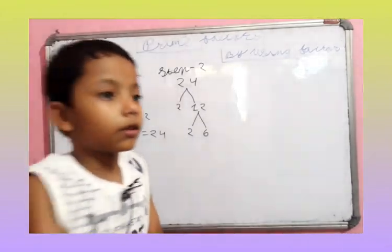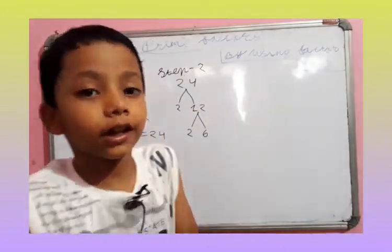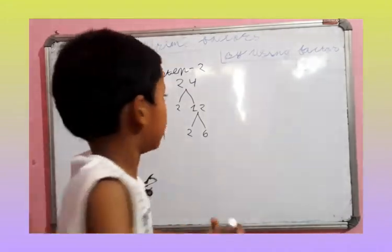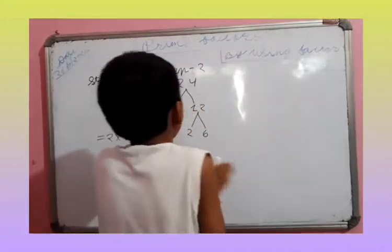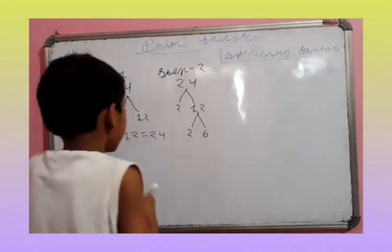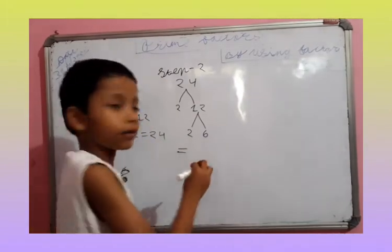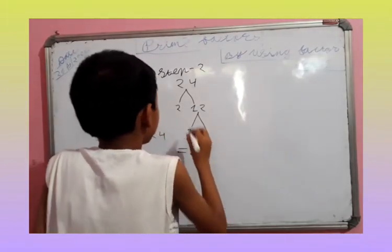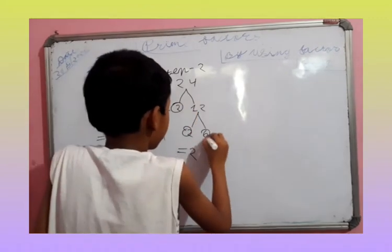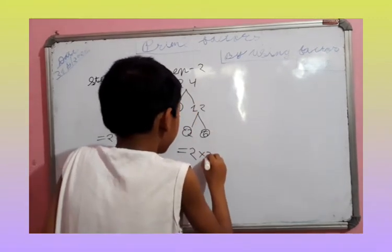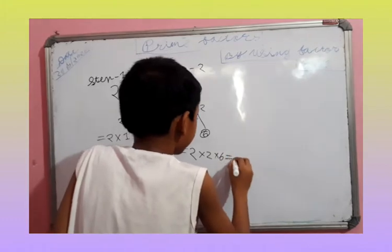Now, the last step. Okay, now let's write it. Let's circle it. 2 times 2 times 6 equals 24.